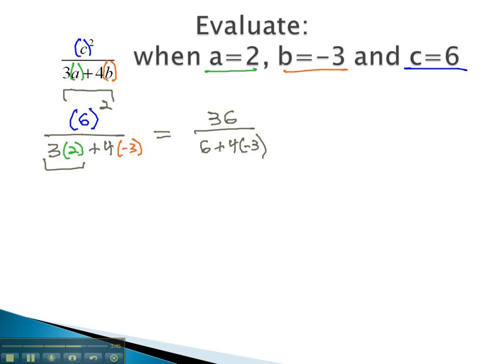Continuing the denominator, working left to right in the multiplication, we end up with 36 over 6, and 4 times negative 3 is negative 12. Finishing the denominator by adding the opposite, we have 36 in the numerator. Then in the bottom, the negative is bigger and 12 minus 6 is 6.